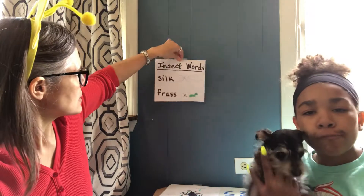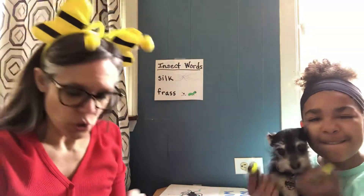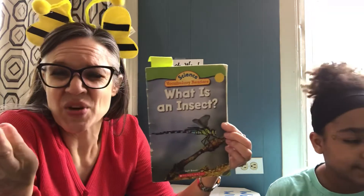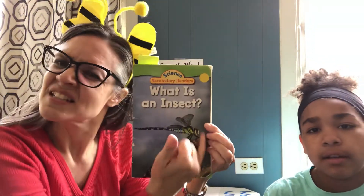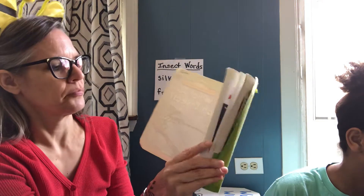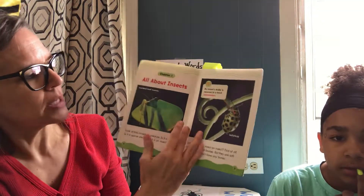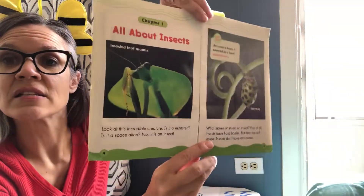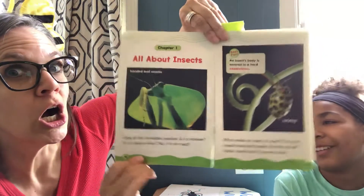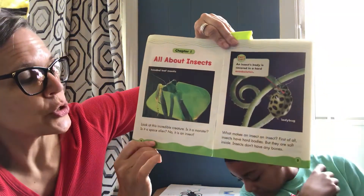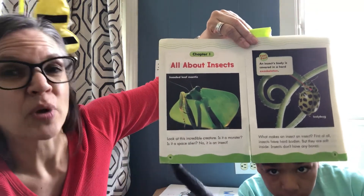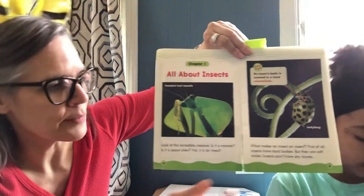Today we're going to look at a book called 'What is an Insect?' — I see a question mark, so it's asking a question. This is by Jeff Bauer. We're going to look at what makes an insect an insect. All about insects — there's a nice little insect that says, 'Look at this incredible creature. Is it a monster? Is it a space alien? No, it is an insect.' India, do you remember what this one's called? A praying mantis — and this is a hooded praying mantis; he looks like he has a little hood on him.